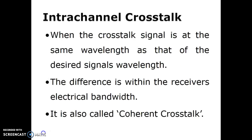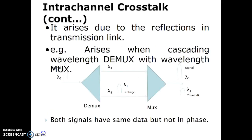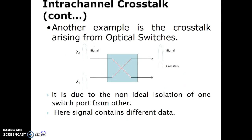When the crosstalk signal is at the same wavelength, it is termed intra-channel crosstalk. The difference is within the receiver's electrical bandwidth. It is also called coherent crosstalk. It arises due to reflections in the transmission link — for example, when cascading a wavelength demultiplexer with a wavelength multiplexer. Both signals have the same data but are not in phase. Another example is crosstalk arising from optical switches, due to non-ideal isolation of one switch port from another.